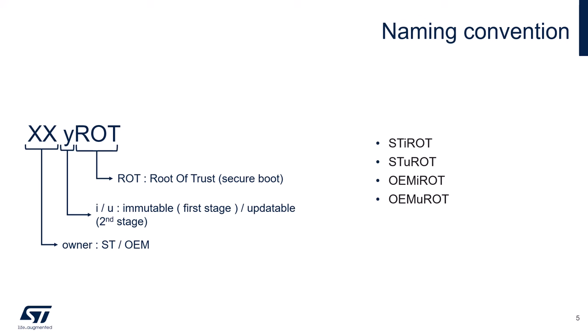Just a couple of words on naming convention. We are going to encounter new terminology related to the root of trust. Depending on the owner and on the immutability, you might find STI-ROT — immutable root of trust from ST — STU-ROT — updatable root of trust from ST — and OEMI-ROT, an immutable or updatable root of trust that you can provide yourself using the templates and examples available within our ST software packages.